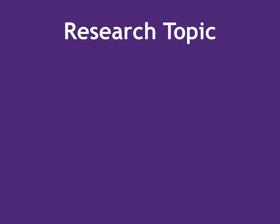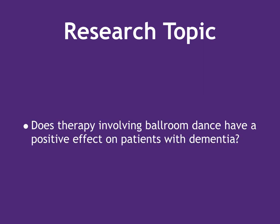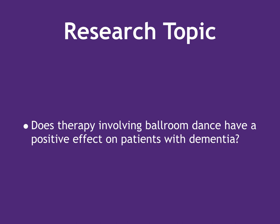The first thing you need to do is write your research topic as a sentence or question. For example, if I am interested in the effects of ballroom dancing on individuals with dementia, my research question might be: Does therapy involving ballroom dance have a positive effect on patients with dementia? Or, if I state my topic as a sentence, I might write: Ballroom dance therapy has a positive effect on patients with dementia.